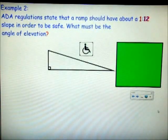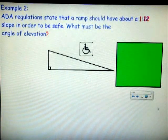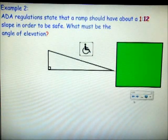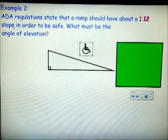Example 2. ADA regulations state that a ramp should have about a 1 to 12 slope in order to be safe. What must be the angle of elevation? This is actually a real ratio that ADA has come up with, and it does include slope, something we know before.